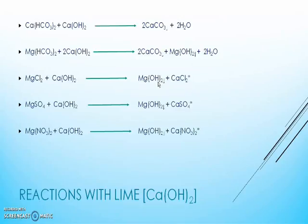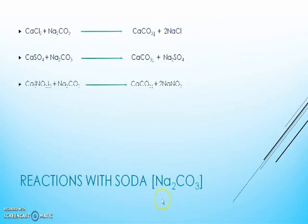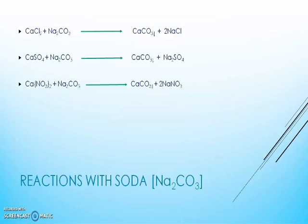But as you can see, chloride, sulphate, and nitrate of calcium, which are soluble in water, cannot be precipitated using lime. Hence we need one more chemical: soda, which is nothing but sodium carbonate. These soluble calcium salts react with soda, that is sodium carbonate, to produce precipitate in the form of calcium carbonate. So at the end, we will get soft water by removing this precipitate from water.